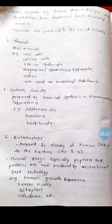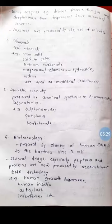The fourth source is minerals. A few minerals such as iron salts, calcium salts, lithium carbonate, magnesium hydroxide, aluminium hydroxide, and iodine are used as medicinal substances. For example, magnesium hydroxide or aluminium hydroxide can be used for neutralization of acidity.